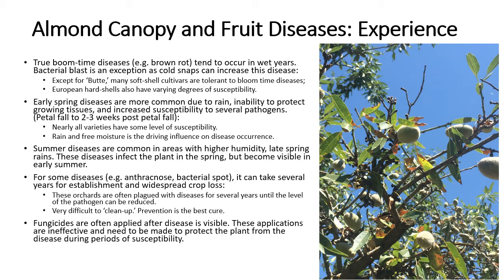Over the past 15 years of working with almonds, I've made several observations. During bloom, bloom time diseases only seem to show up in extremely wet years. This means that fungicide applications can be made based on predicted weather instead of the calendar, and may be withheld if dry conditions occur. Springtime diseases tend to be observed more frequently, often because fungicide applications weren't properly selected or timed during periods of susceptibility. I've also noticed that summer diseases are increasing, and much of this I think is due to increasing humidity within orchards due to increasing density. These diseases need to be controlled in the late spring, not after occurrence. Spring and summer disease occurrence is typically due to missed spray timings, poor fungicide selection, or sometimes just spraying fatigue.